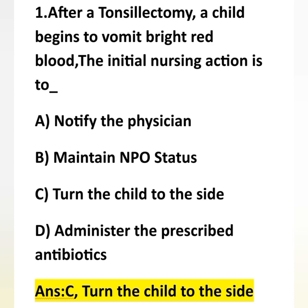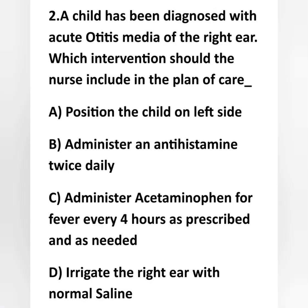The first priority action is to turn the child to one side in order to prevent aspiration. Then the nurse should notify the physician, maintain NPO status, and if an antiemetic is prescribed, administer it. The immediate nursing action is option C — turn the child to one side. Option C is correct.